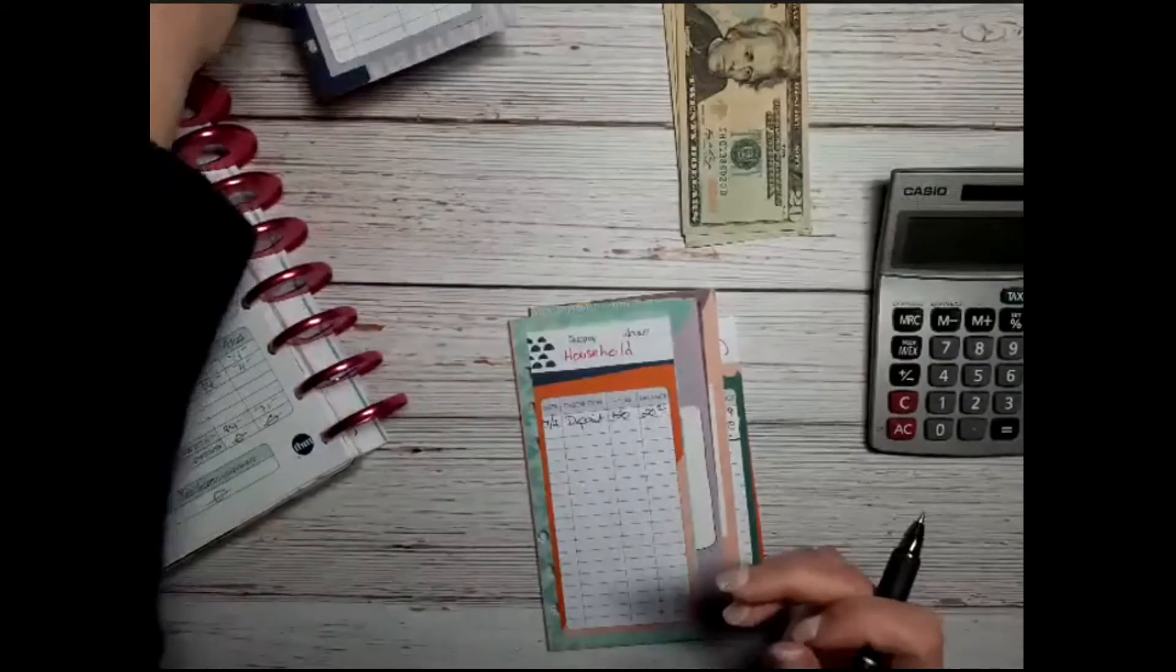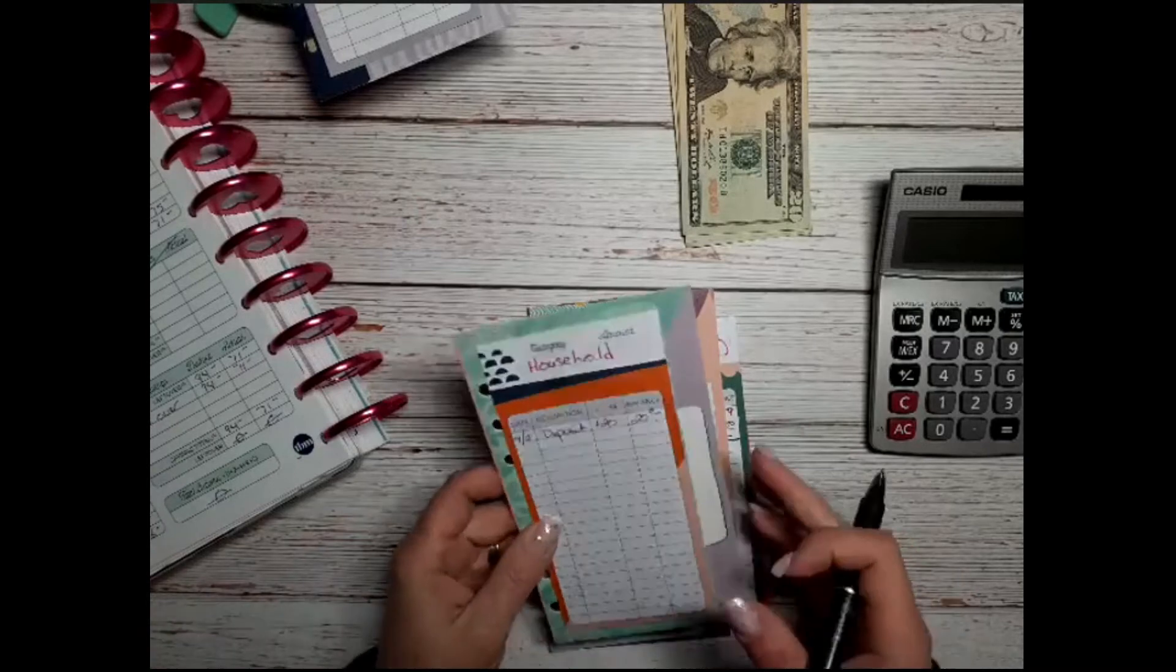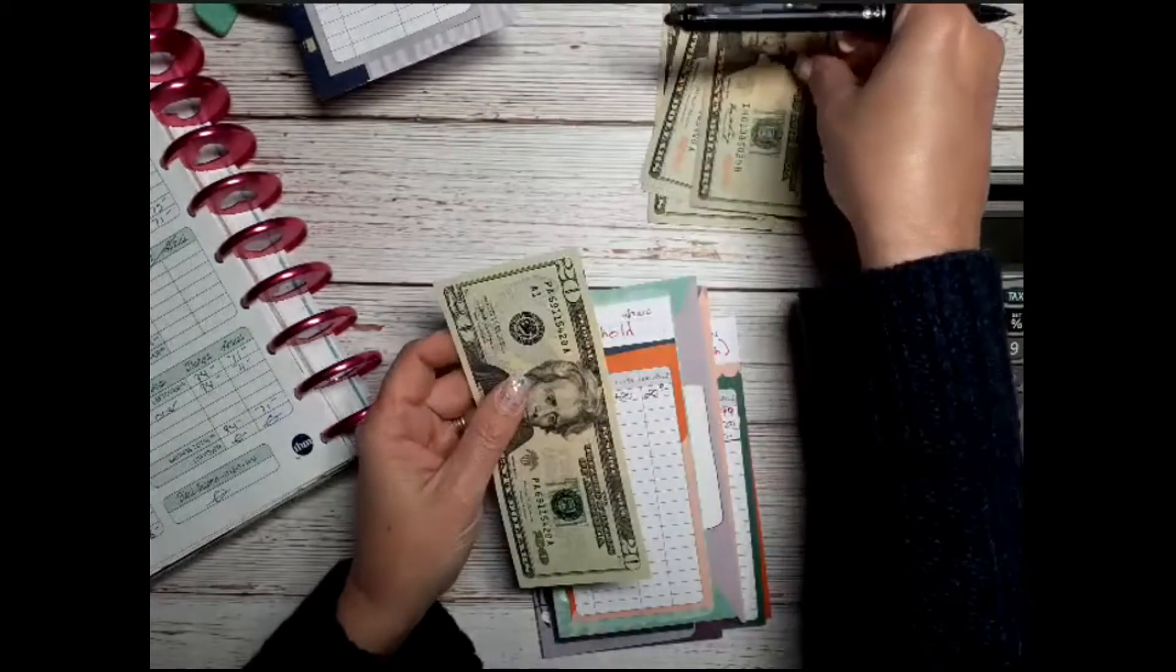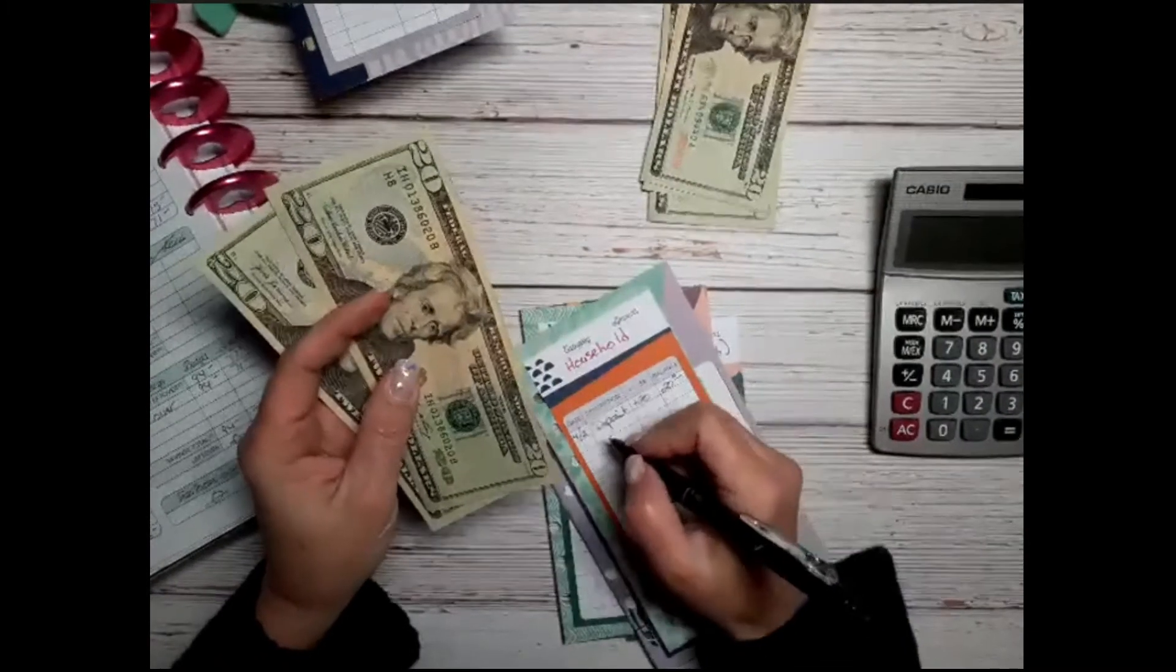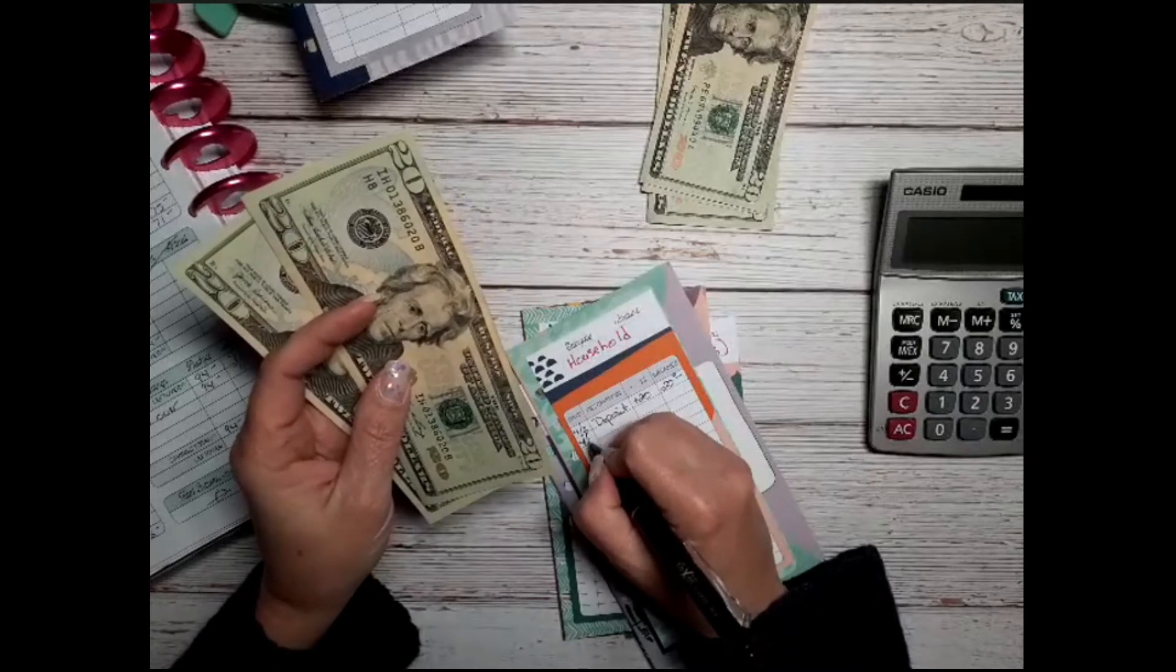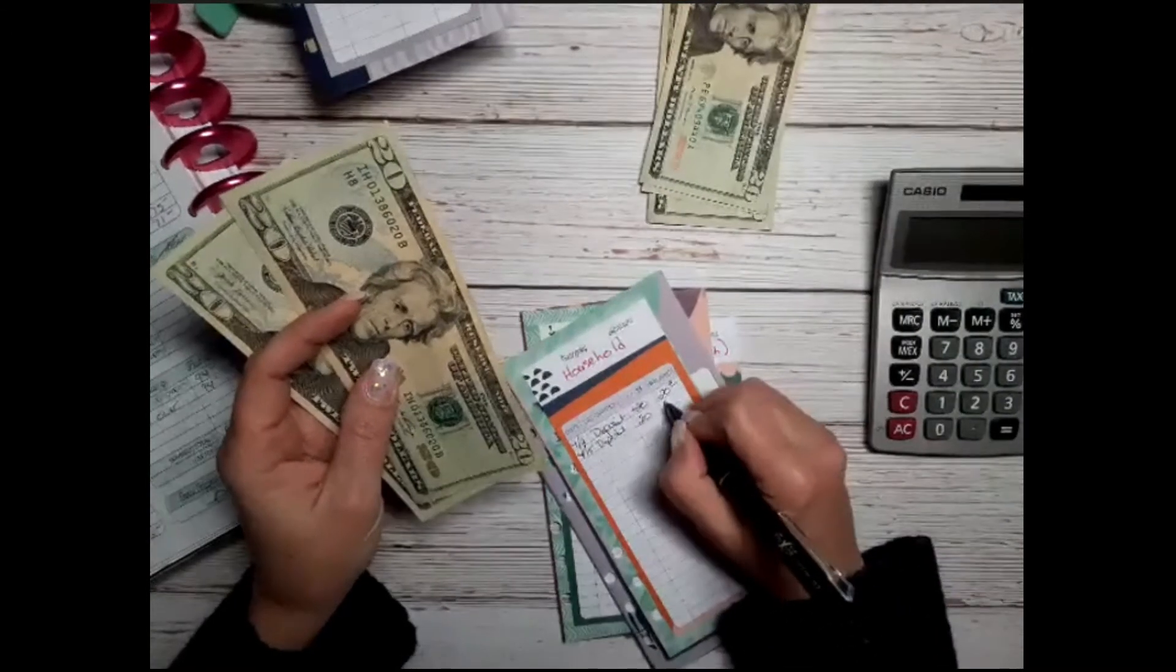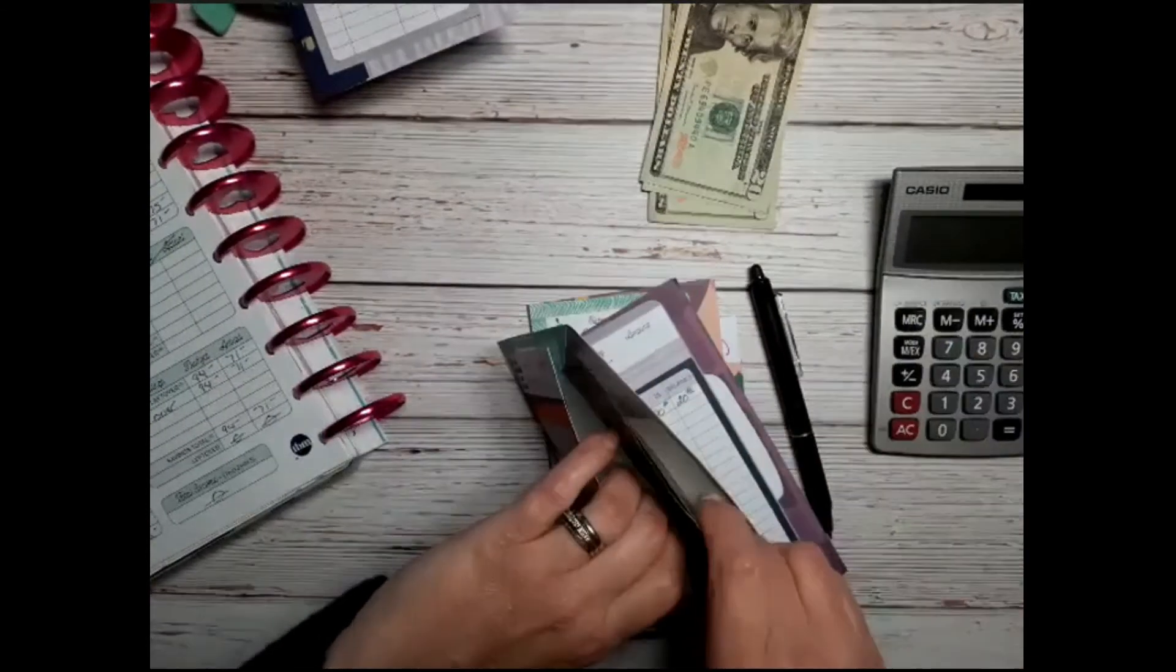Alright, household, we're going to be putting $20 in that and it looks like there's $20 in there already. So we're going to add $20 to it, and again the ATM only gives me denominations of twenty dollars. So deposit $20, so that's going to give us $40. This envelope, the household envelope is done.